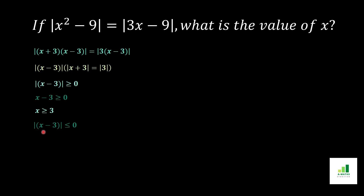The second condition for |x - 3| is x - 3 < 0, which means x < 0. Moving -3 to the other side, we get x ≤ 3.